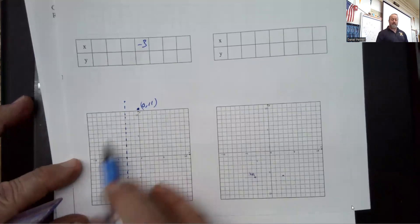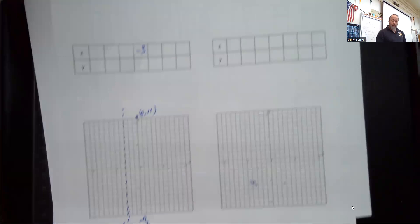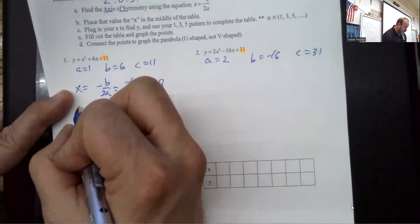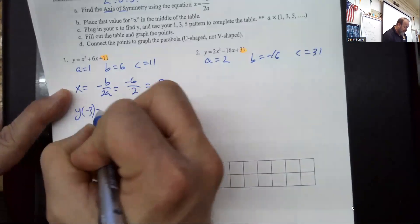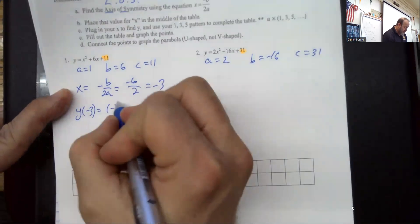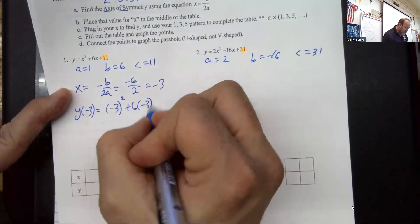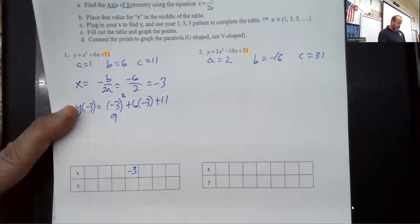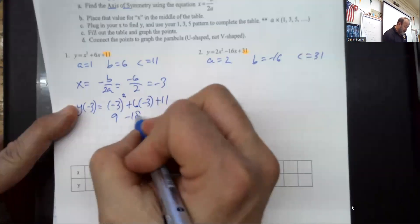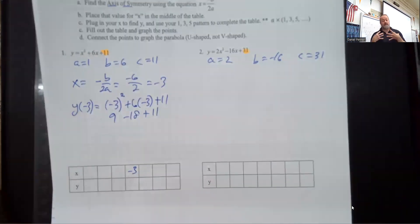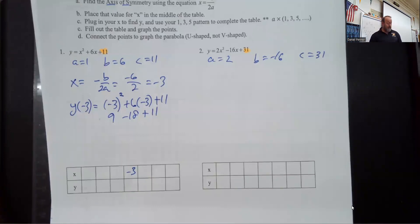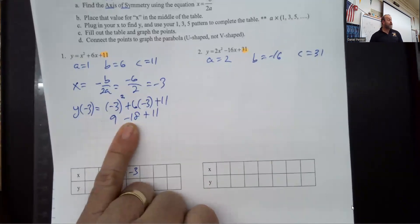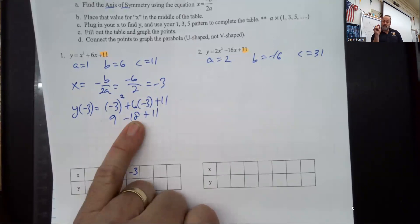Now we take that negative 3 and plug it into the original function. Plugging in negative 3: negative 3 squared is 9, 6 times negative 3 is negative 18, plus 11. One thing to remember is that if you do this correctly, these two numbers will always be in a 2-to-1 ratio — the second number will be twice as big as the first.